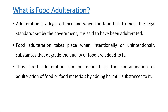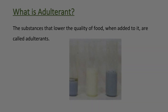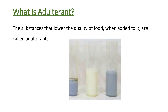First, let's see what is food adulteration. Adulteration is a legal offence and when the food fails to meet the legal standards set by the government, it is said to have been adulterated. Food adulteration takes place when intentionally or unintentionally substances that degrade the quality of food are added to it. Thus, food adulteration can be defined as the contamination or adulteration of food or food material by adding harmful substances to it. The substances that lower the quality of food when added to it are called adulterants.